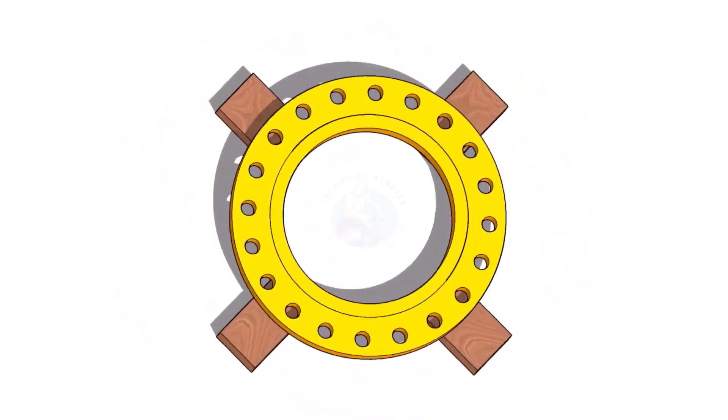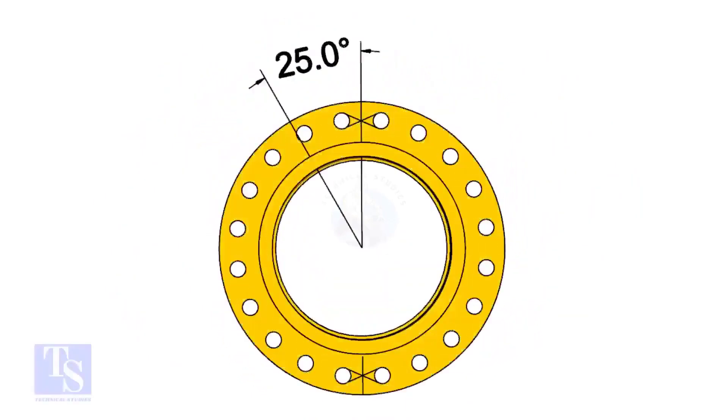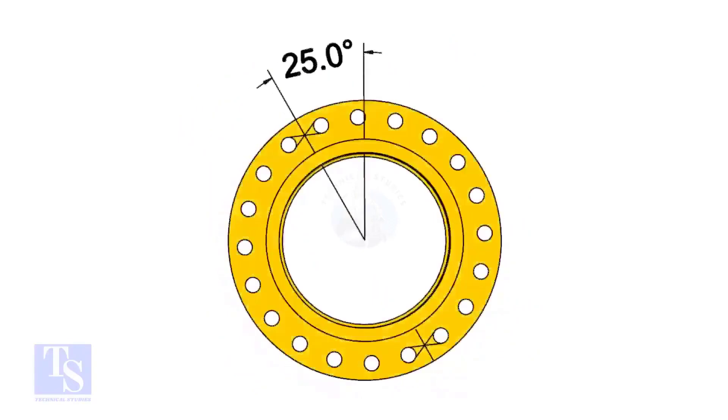The pipe and the flange size is 16 inch, and the flange will rotate 25 degrees anticlockwise. Hope you all know the difference between clockwise and anticlockwise rotation.